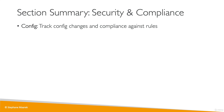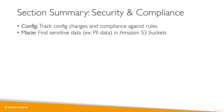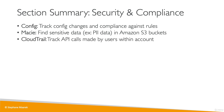We have Config, which allows us to track configuration changes and also create rules to check compliance of these resources' configuration over time. Macie is a way for us to find sensitive data — for example, PII data, so personal information — in Amazon S3 buckets.